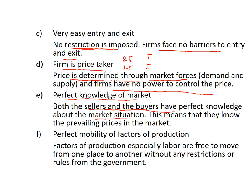There is also perfect mobility of factors of production — labor, for example, is free to move from one company to another without any restriction or rules from the government, because firms produce the same product.